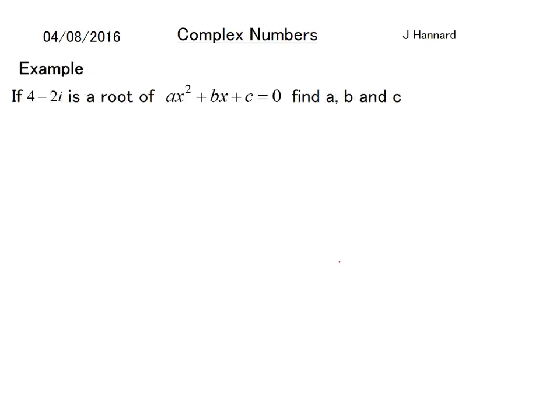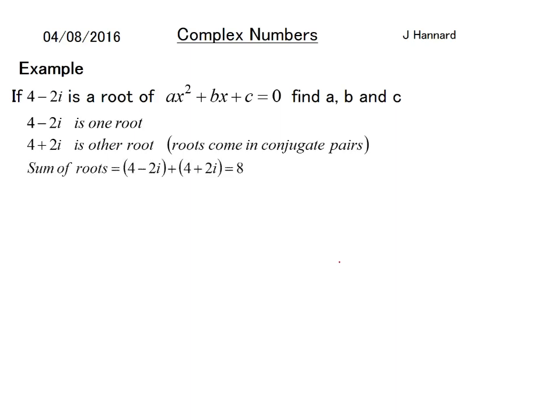Example: If 4 - 2i is a root of ax² + bx + c = 0, find a, b, and c. Well, if that's one root, then we know the other root is 4 + 2i because they come in conjugate pairs. The sum of the roots is 8 (the i's cancel out), and the product of the roots is (4 - 2i)(4 + 2i).